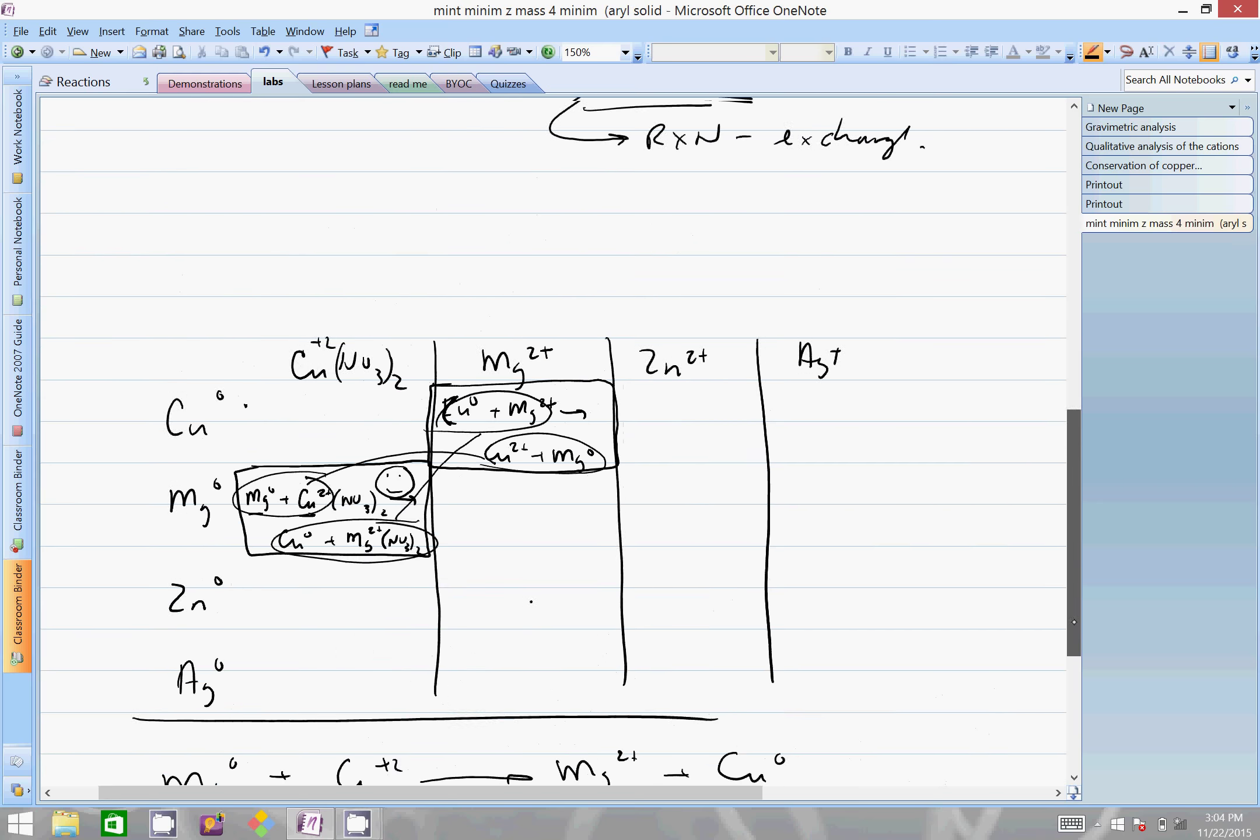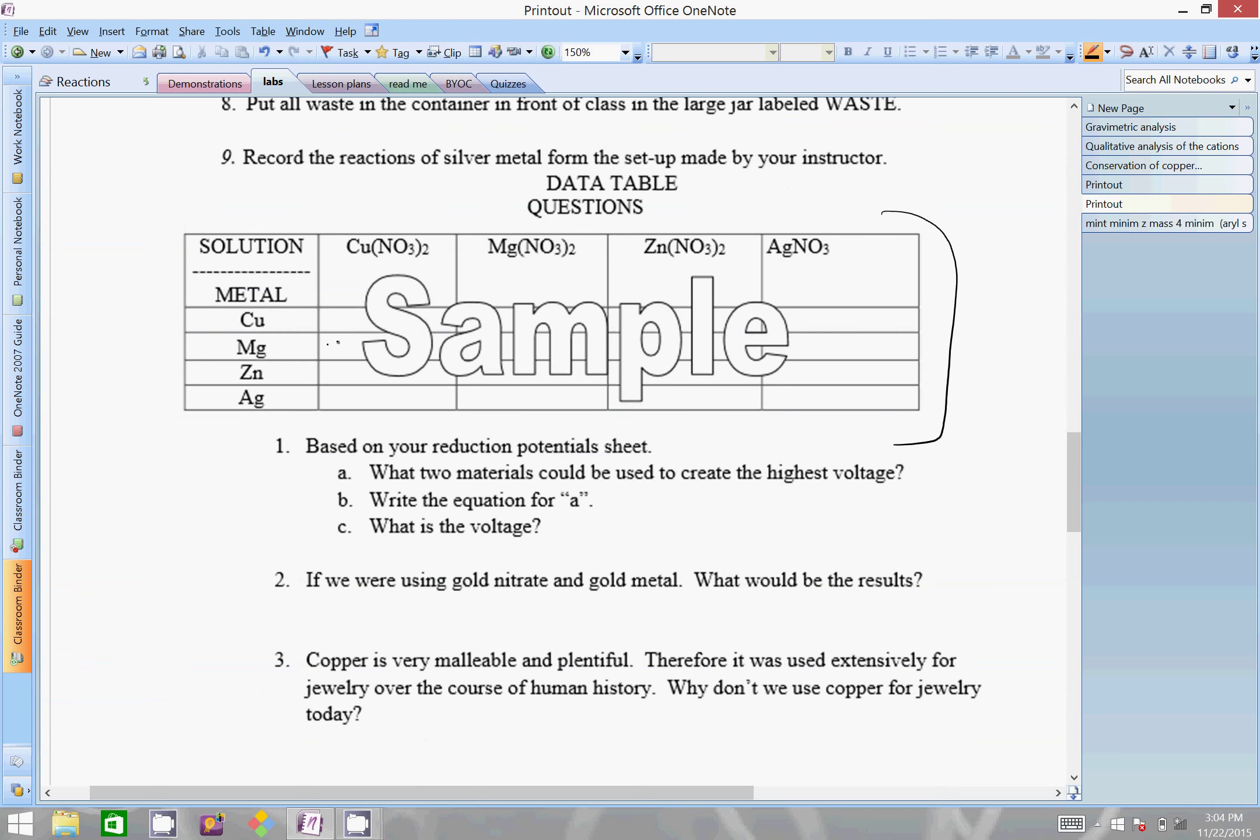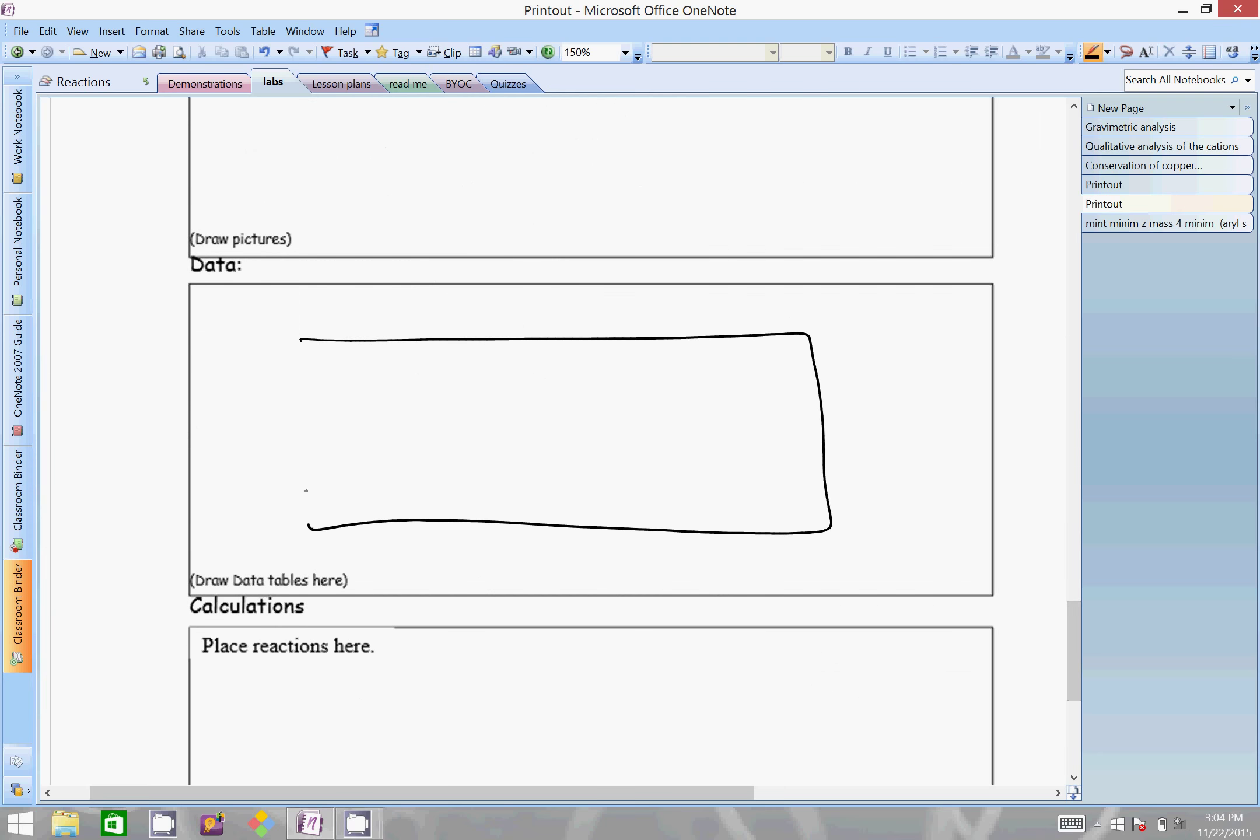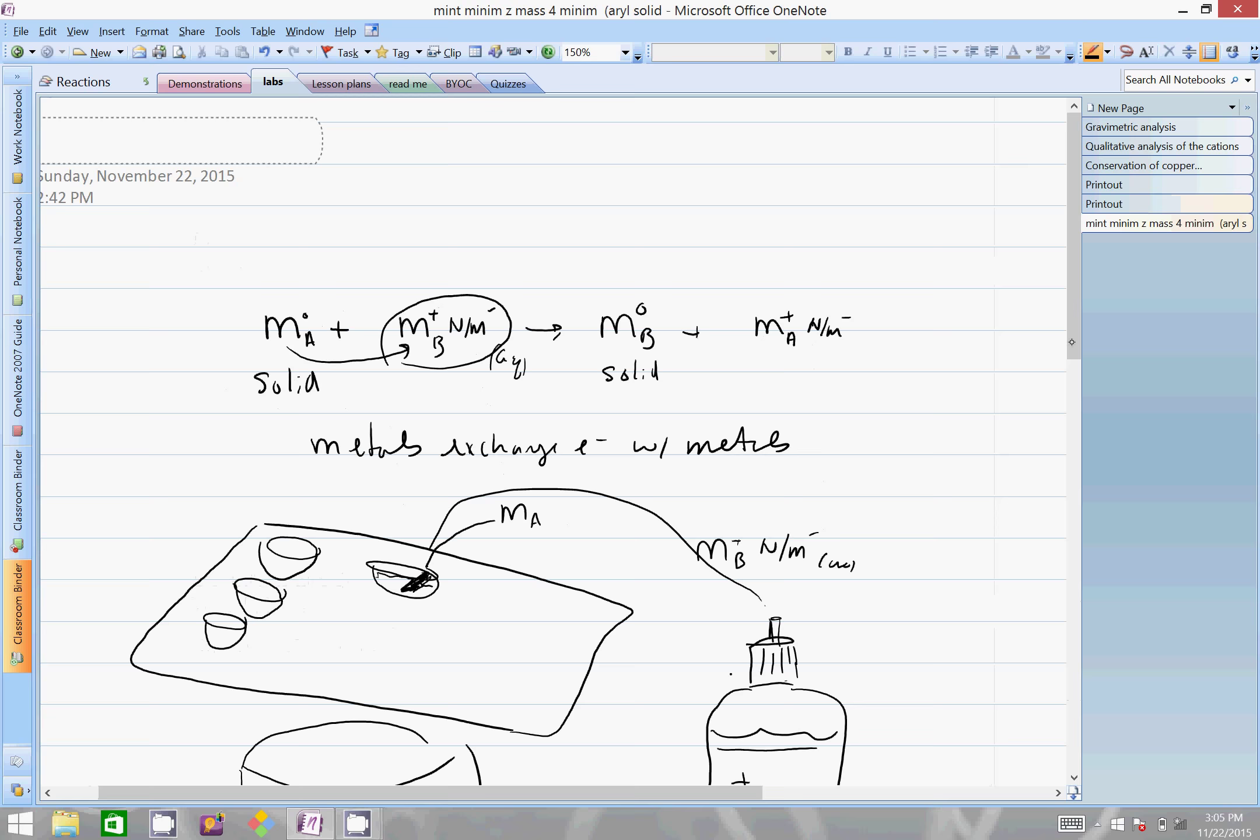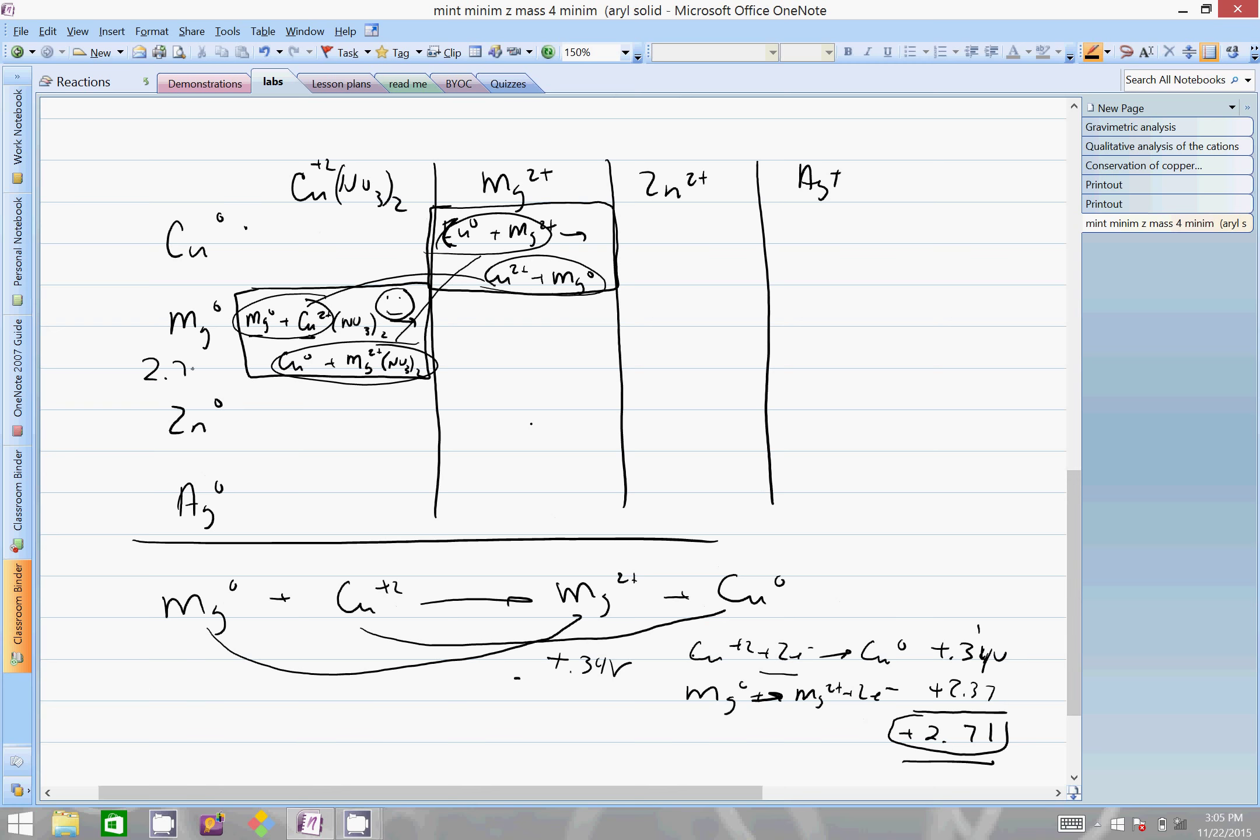Add those two together. This would be magnesium metal going to magnesium 2+ plus two electrons, and this is going to be 2.71 positive. That means that this reaction is going to run. In my data table above here is where I'd probably want to put that, so this guy right here is going to run.